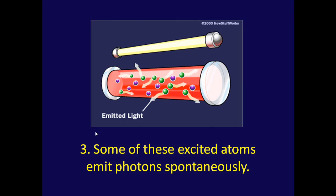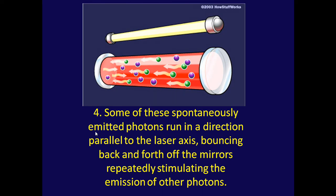These constituent atoms then release photons spontaneously by the process talked about earlier. Some of these spontaneously emissive photons run in a direction which is parallel to the lasing axis, therefore bouncing off either end of the active medium off the reflective surfaces, repeatedly as they move back and forward between the two surfaces, stimulating further emission of photons from the constituent atoms.